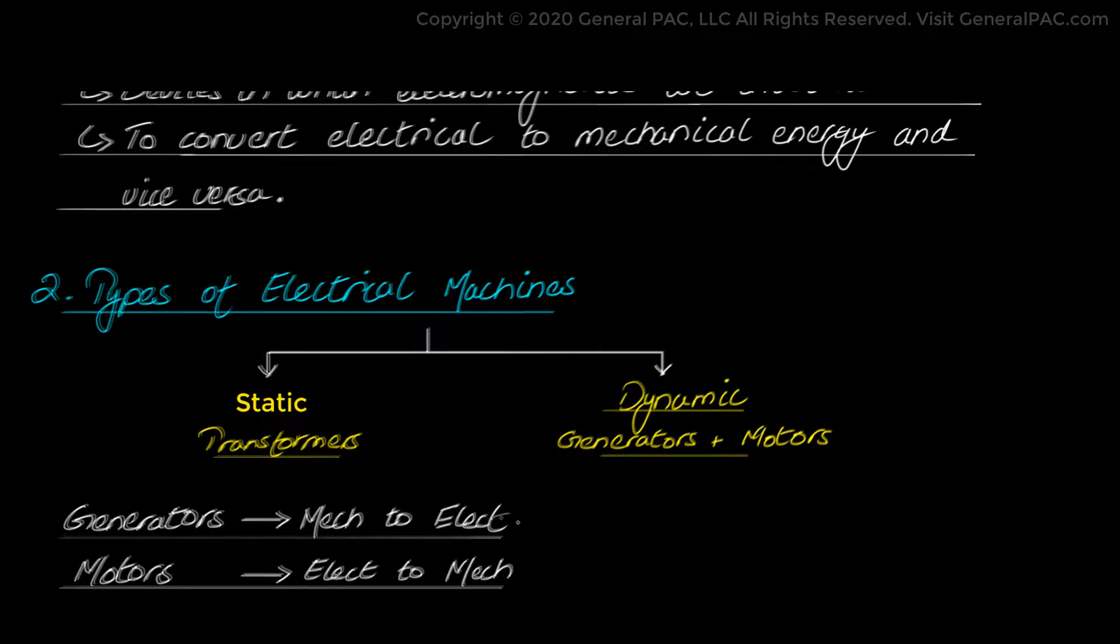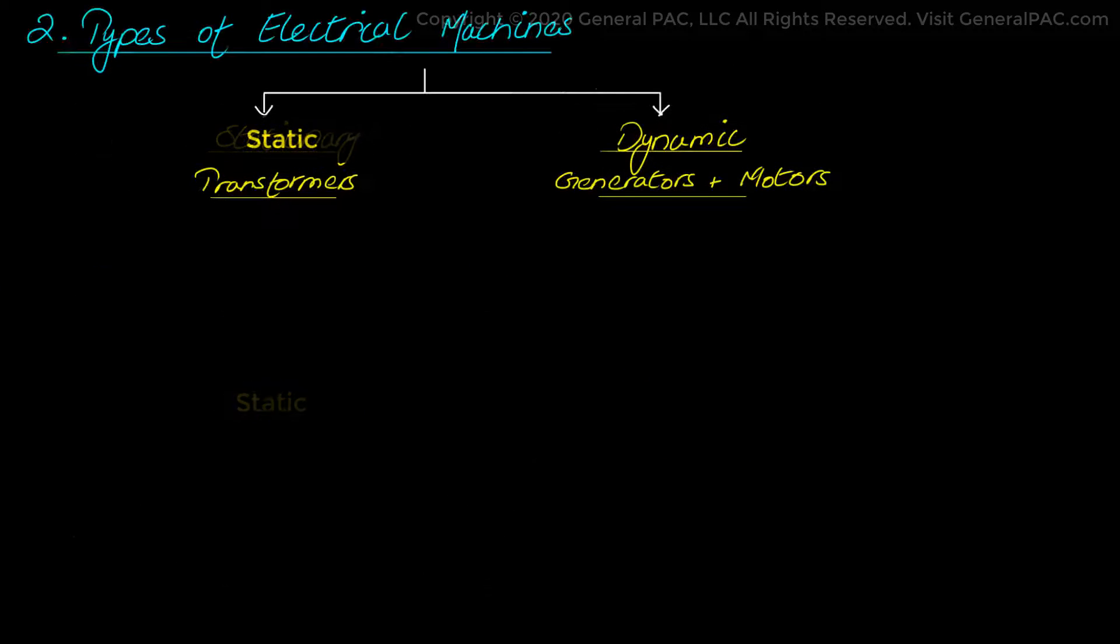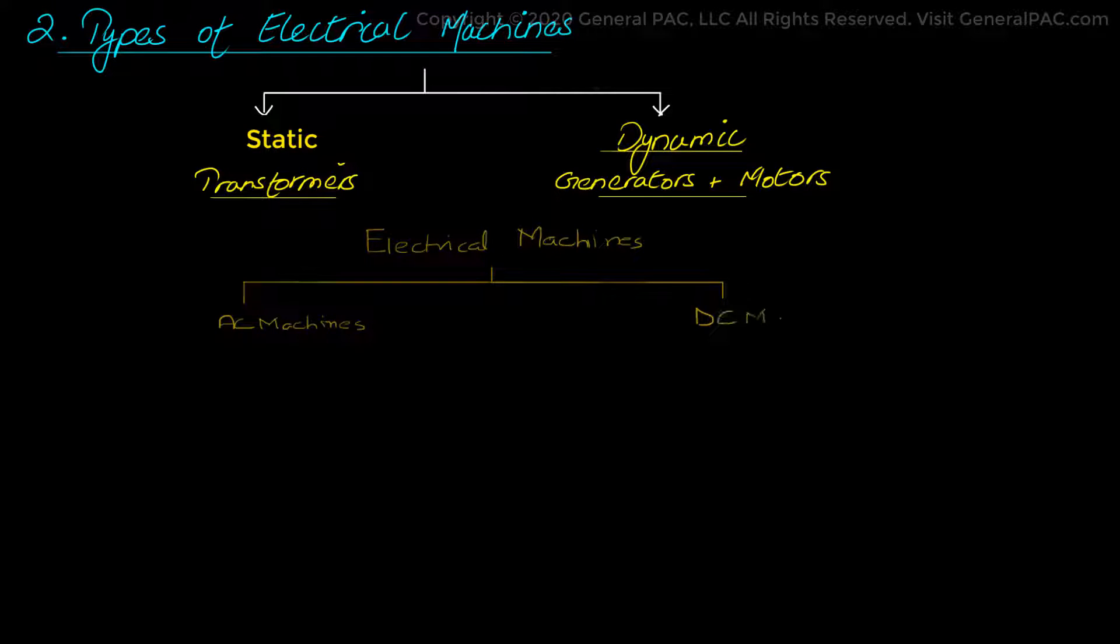Now, we look at further classifications of electrical machines. Well, it's quite conceivable to categorize electrical machines based on AC and DC. Here, the AC machines can be divided into two main types. There's the synchronous machines and then there's the asynchronous machines.